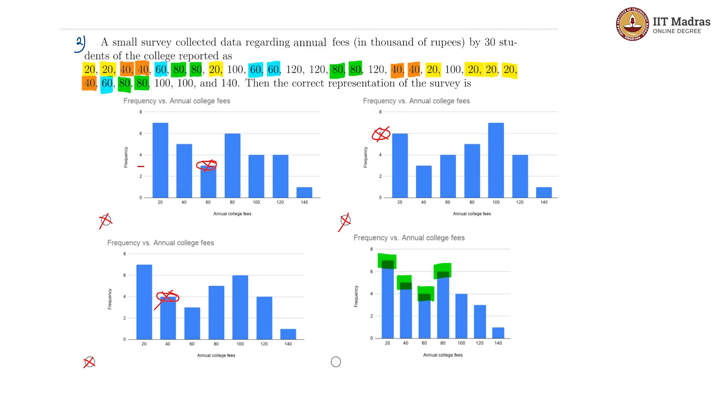And 100s. 1, 2, 3, and 4. So there are 4 100s, and yes, that is correct. There are 4 100s.